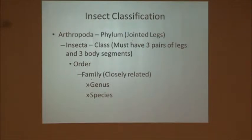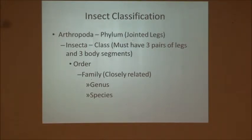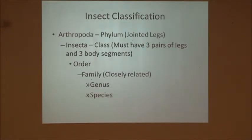Insect classification: Arthropoda is the phylum — jointed legs. Insecta is its class; it must have three pairs of legs and three body segments to be a true insect. And then the order is just its family, genus, and species — just like in a flower, insects have families of genus and species.